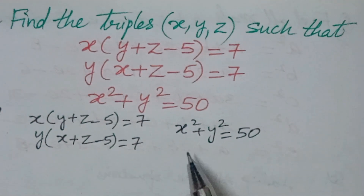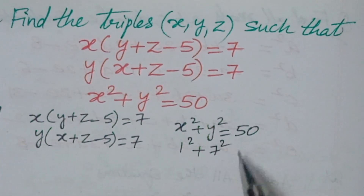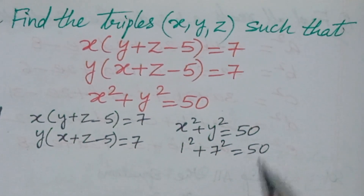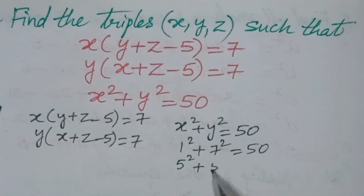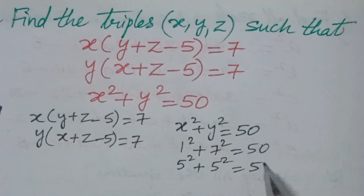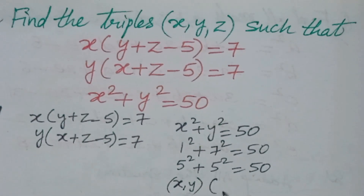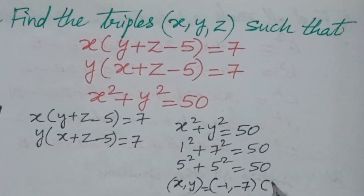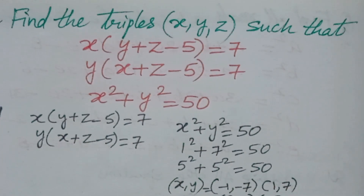Solving x² + y² = 50: we get 1² + 7² = 50, and also 5² + 5² = 50. So these are the possibilities for x and y values: x and y can be (±1, ±7), (±7, ±1), (±5, ±5), giving many combinations.